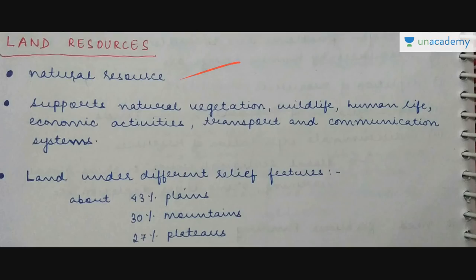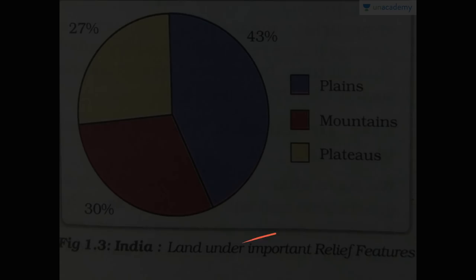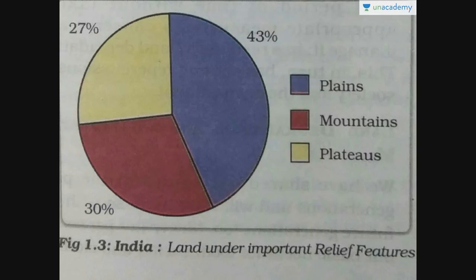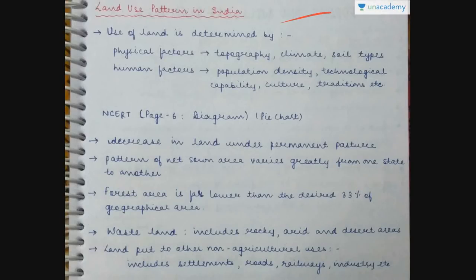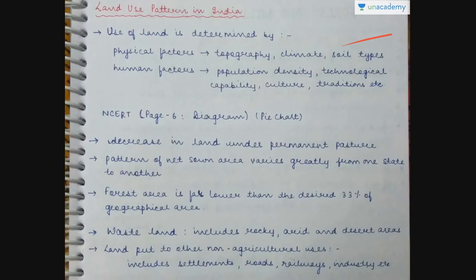Land is a natural resource. It supports natural vegetation, wildlife, human life, economic activities, transport, and communication systems. The land present in India is under different relief features: about 43% is plains, about 30% is mountains, and about 27% is plateaus. The land use in India is determined by physical factors such as topography, climate, and soil types, as well as human factors like population density, technological capability, culture and traditions.